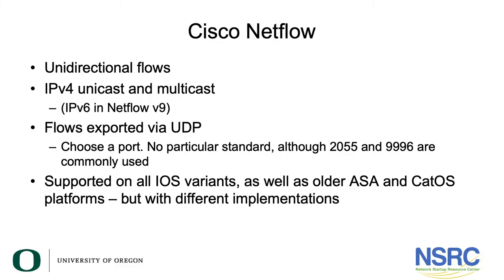Let's have a look at Cisco's NetFlow in detail. We mentioned earlier about unidirectional flows. We consider IPv4 unicast and multicast, and we need NetFlow version 9 to support IPv6. Flows are exported via UDP, and you need to choose a port — there's no particular standard, although 2055 and 9996 are commonly used in many published examples online.